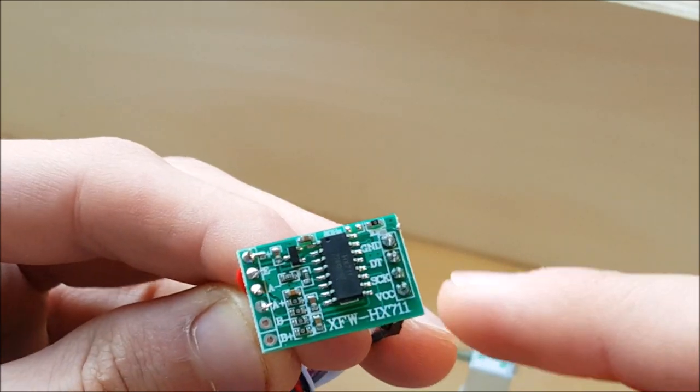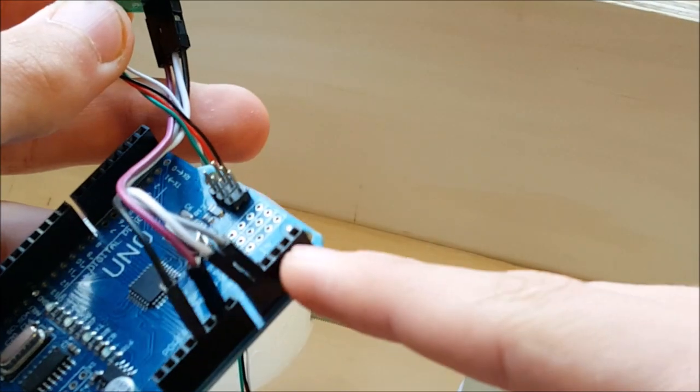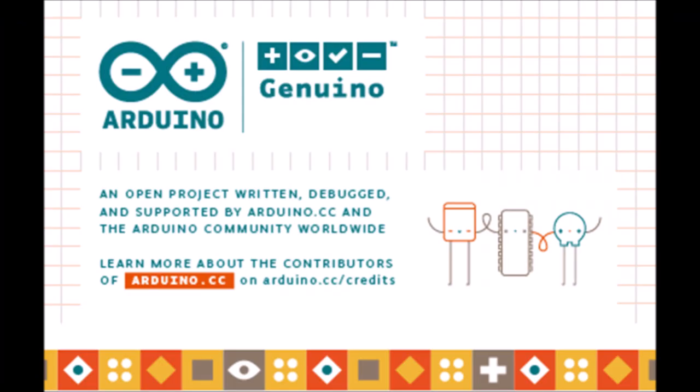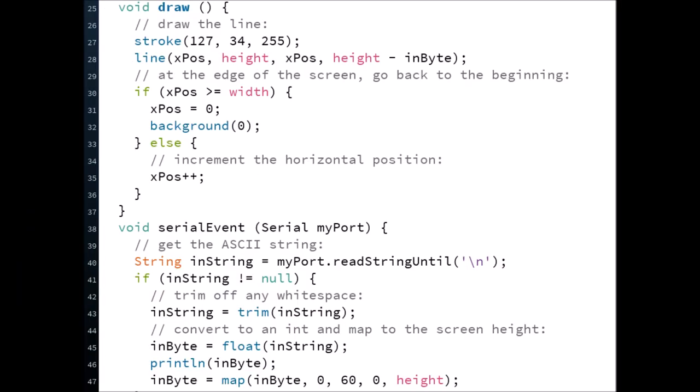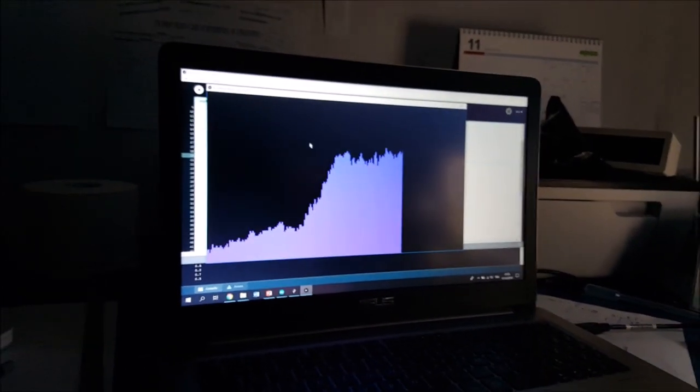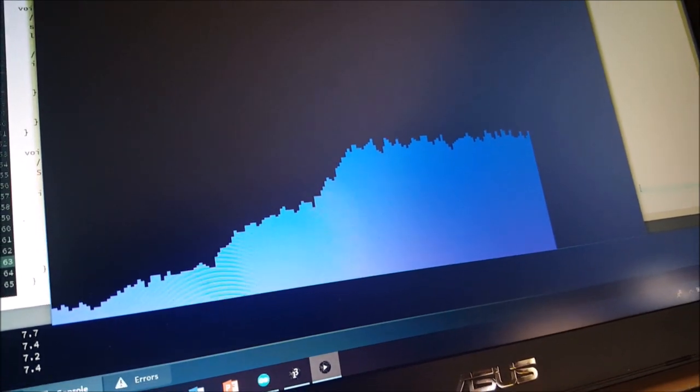So the HX711 goes to the Arduino, which then sends the data over to Processing. Processing is very similar to the Arduino IDE, but is more visual and can be used without an Arduino board. In the end, the force value will be displayed as a bar with a proportional height. Over time, we can see the peak that we note down for each object.